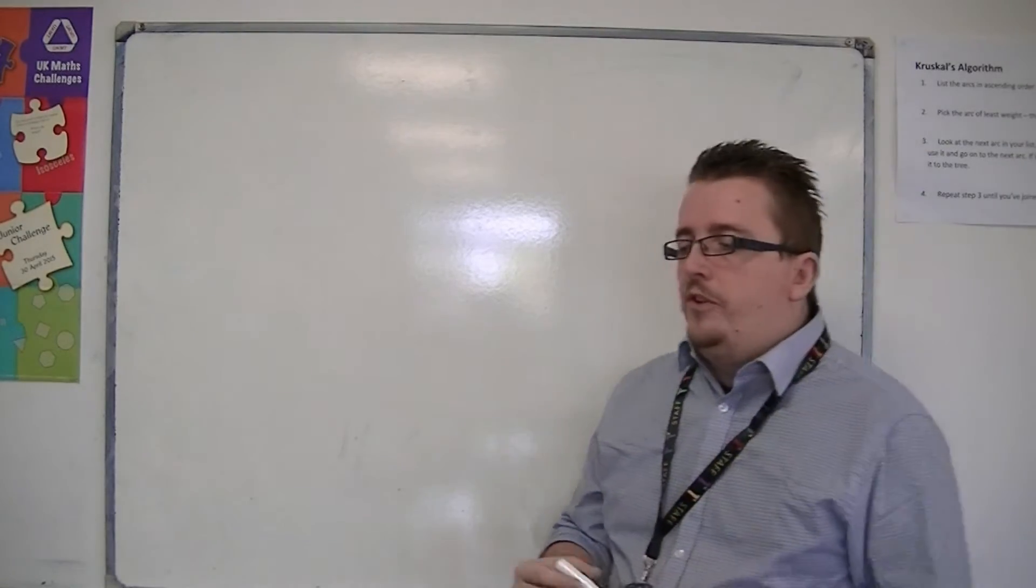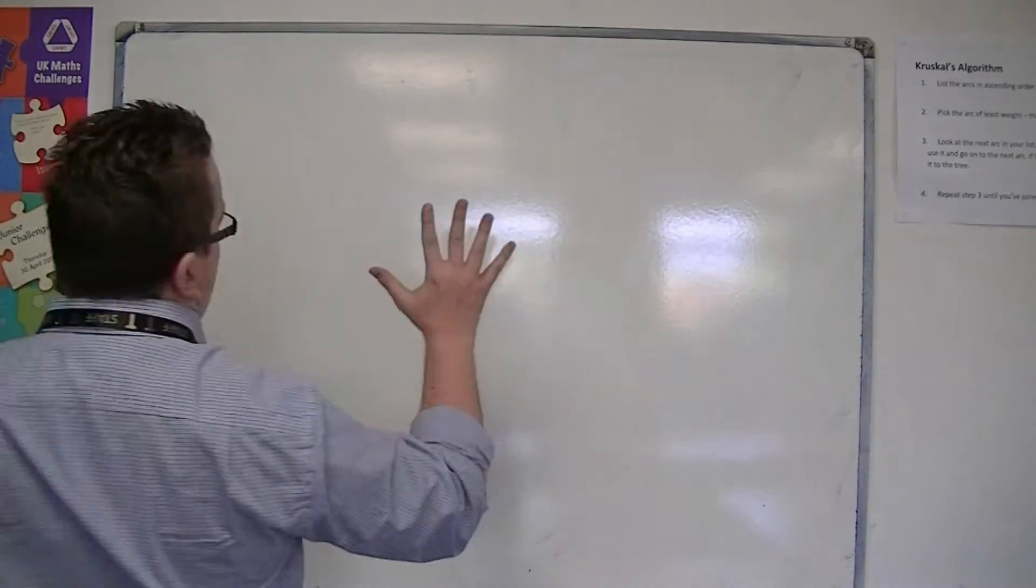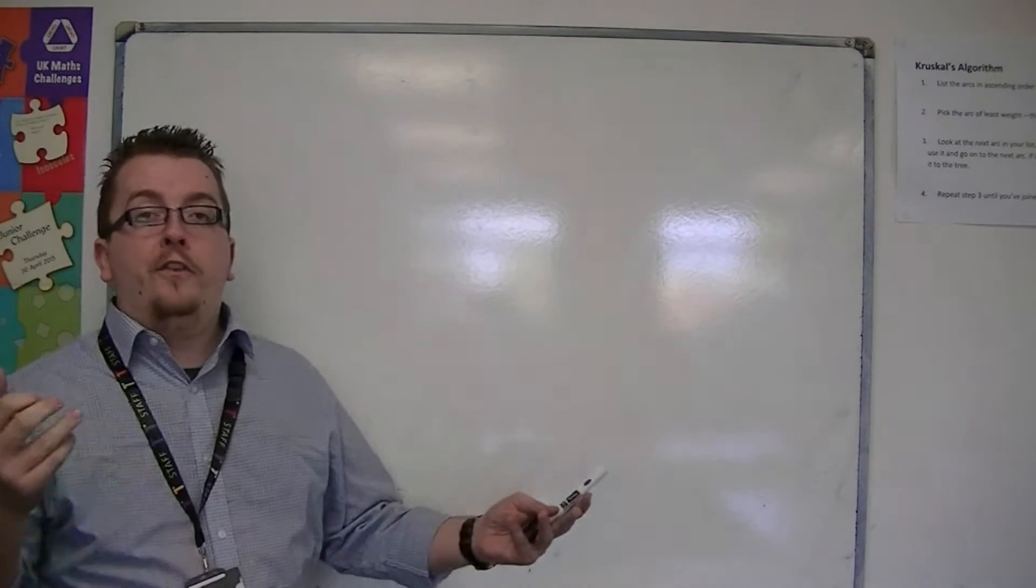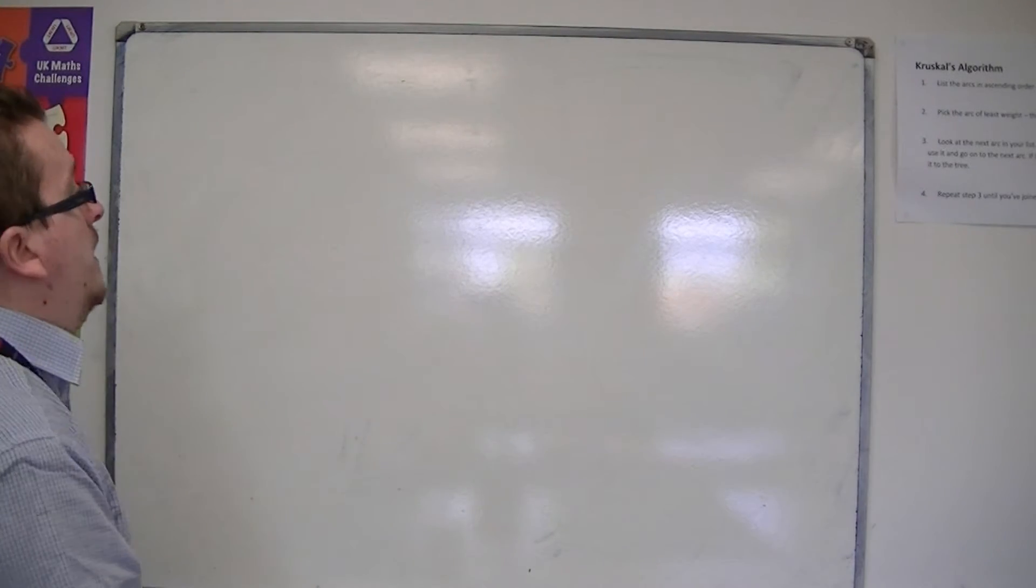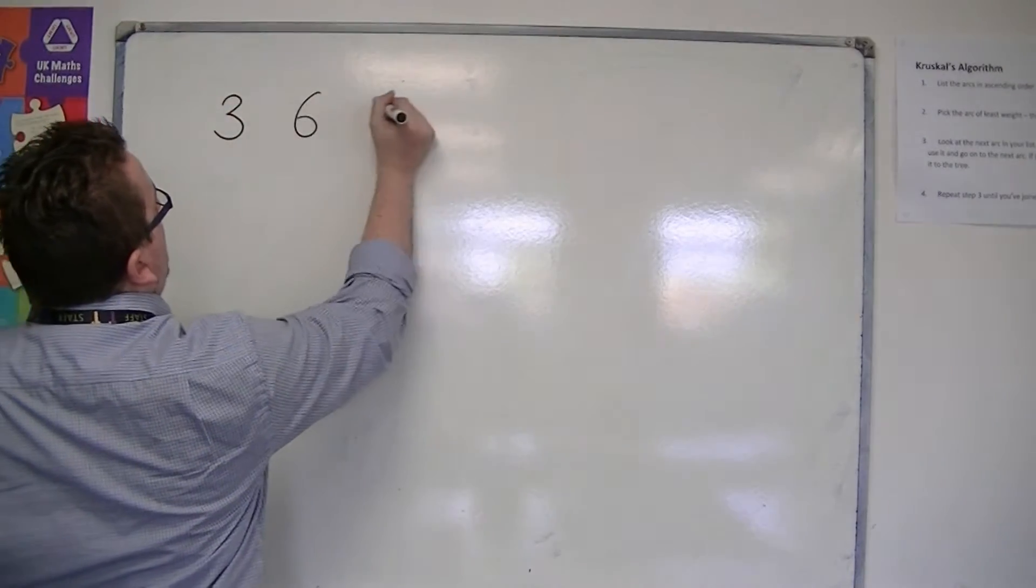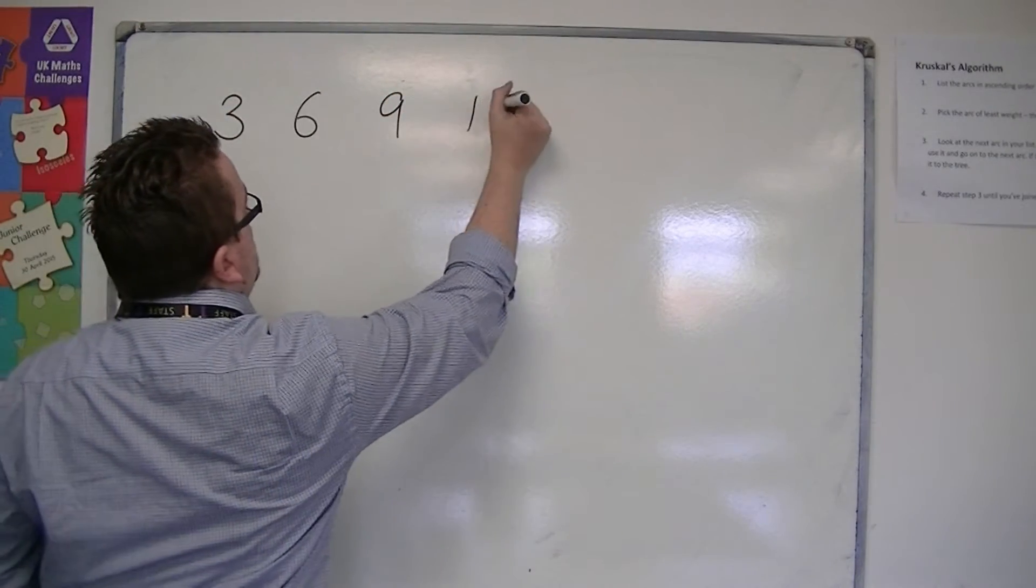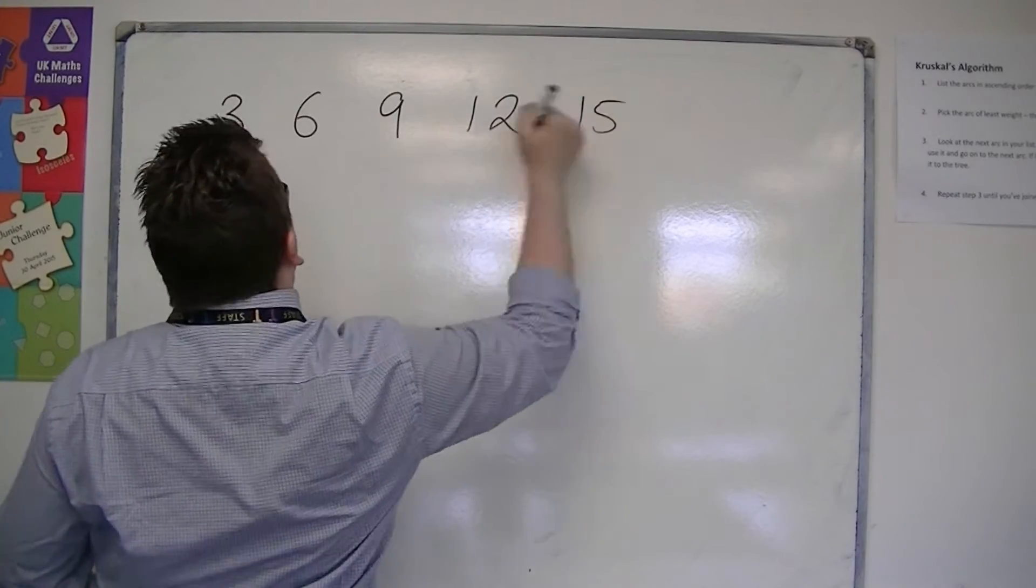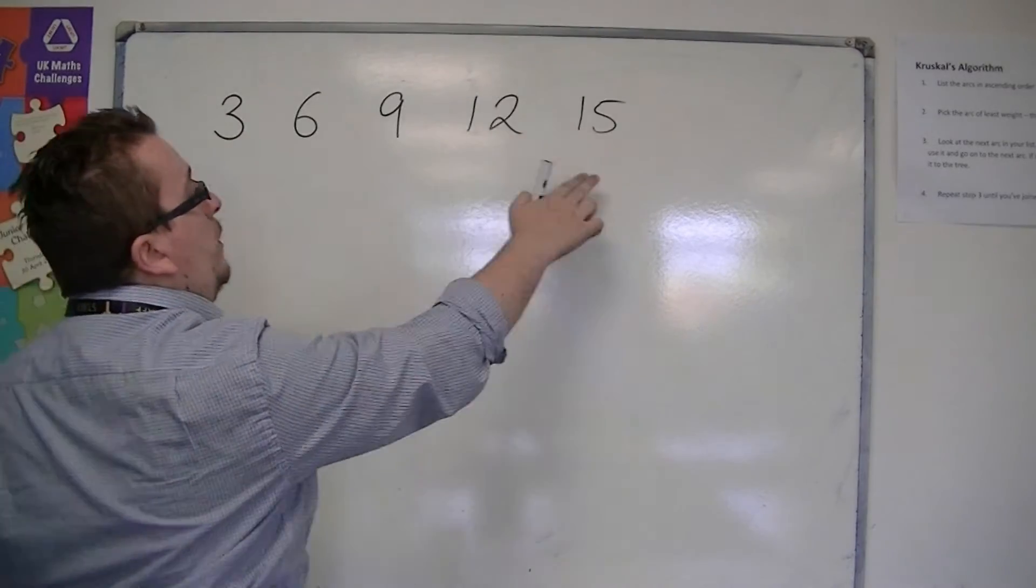For example, if I wanted to write down the first five multiples of three, then they would be the first five numbers that appear in the three times table. And so they would be three, six, nine, twelve, and fifteen.